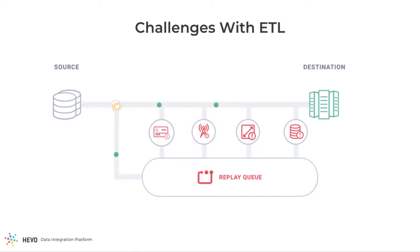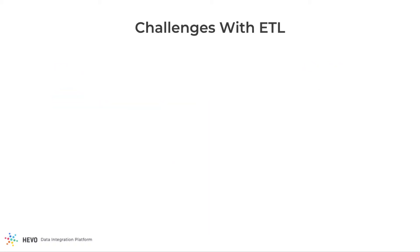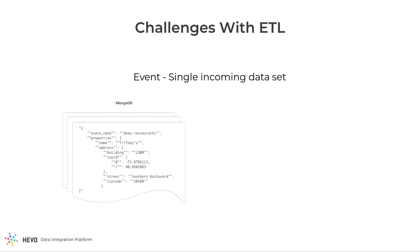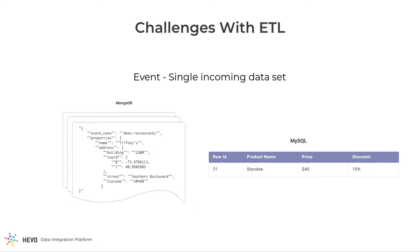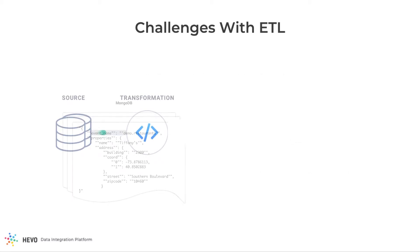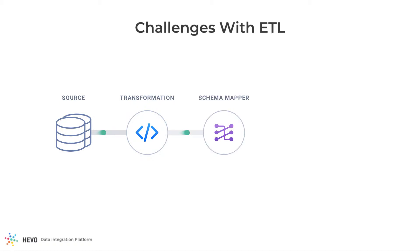Let me show you the lifecycle of an individual event on HEVO. An event is a single incoming dataset. In MongoDB, a single document in a collection is an event. Similarly, a single row in MySQL is an event. HEVO pulls an event from the source and brings it to the transformation stage. If you've defined any transformations on the event, this is applied and the event moves to the schema mapper.